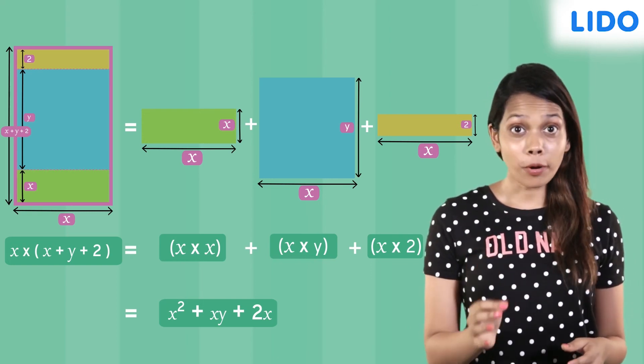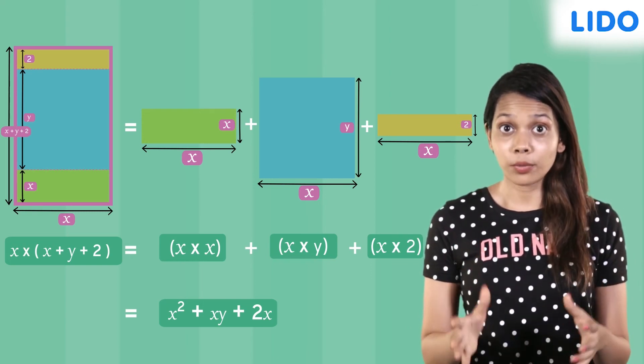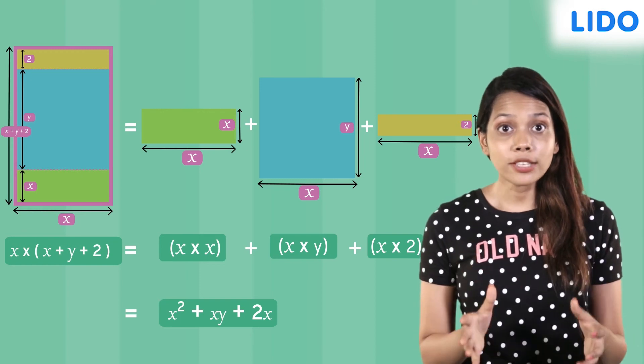Remember the distributive property allows us to distribute multiplication over addition or subtraction. So to simplify any expression we just have to apply the distributive property. That's all for today. See you next time.